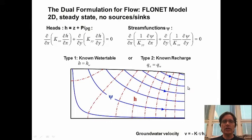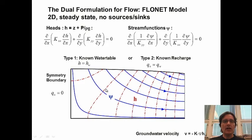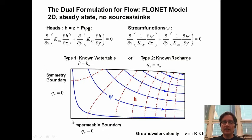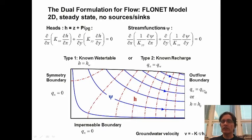Looking at boundary conditions for our vertical flow model: for the water table, we can either fix the hydraulic heads at the water table elevation, or apply a Type 2 boundary condition where we know what the recharge is — this latter approach turns out to be much better. We might have a natural symmetry divide where the flux is zero, the same effect as a symmetry boundary. On the bottom we often use an impermeable boundary — a clay layer or unfractured rock — again a zero flux condition. At the right boundary, we might have an outflow boundary with a known non-zero flux, or impose a hydraulic head to let flow leave the domain.